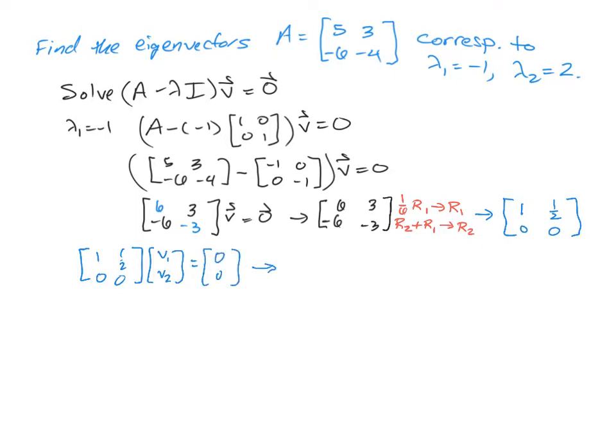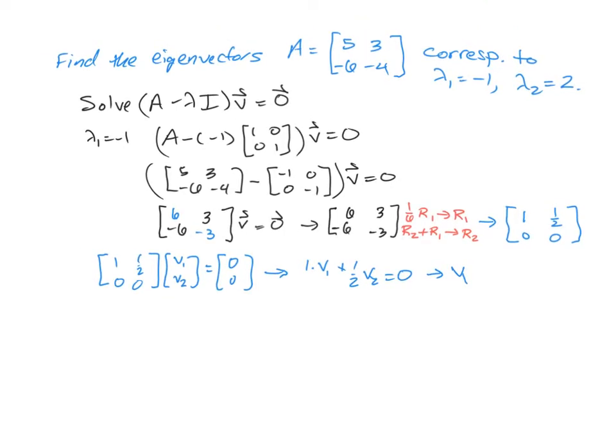If we now multiply this out, this says that 1 times v1 plus 1/2 times v2 is equal to 0, or v1 is equal to negative 1/2 of v2. So when we build our vector v back, we're going to have our two components, v1 and v2, which is going to have our negative 1/2 v2 in the first spot for v1, and v2 will just stay the same.